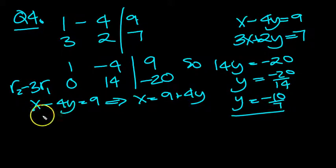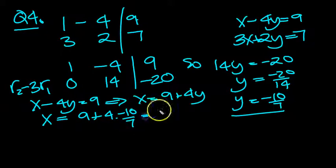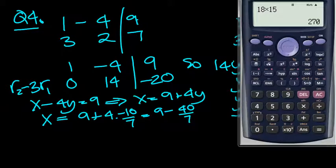We know y is minus 10 sevenths. So x equals 9 plus 4 times the y, which is minus 10 over 7. So it's 9 minus 40 sevenths. So if we tap that in the calculator, should we do that? Let's get our calculator then.